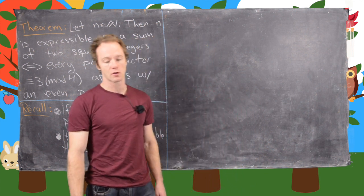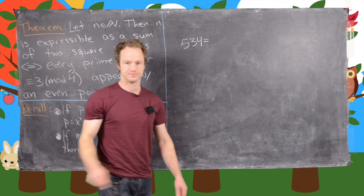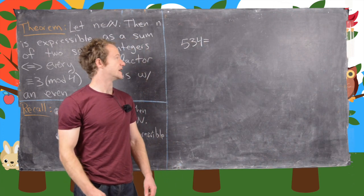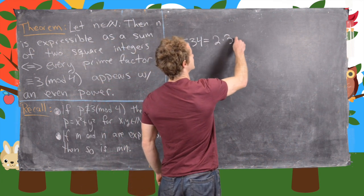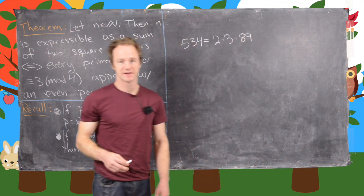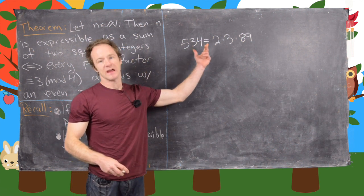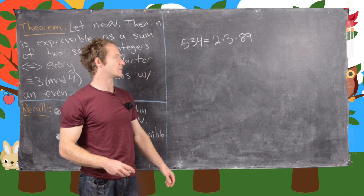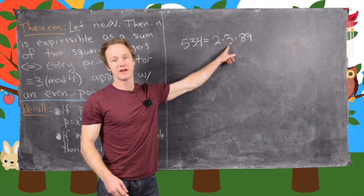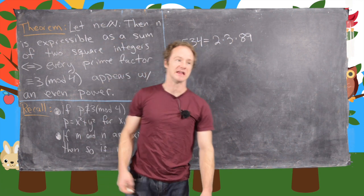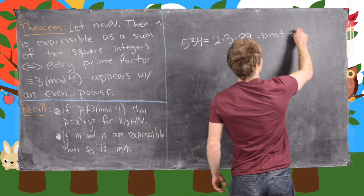Before we get going with the proof, let's look at a couple of quick examples. So let's look at 534 first. We factor this into its primes: 2 times 3 times 89. Now 2 is the special even prime, 89 is congruent to 1 mod 4, but 3 is congruent to 3 mod 4 and it does not appear with an even power. So that means 534 is not expressible as a sum of two squares.